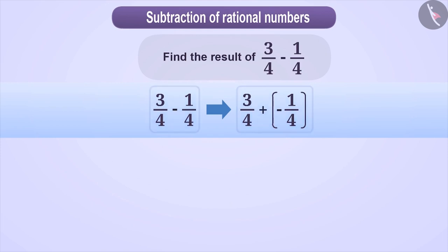After this step, we make the denominator of the rational numbers equal. Since the denominators are already equal, we ignore this.